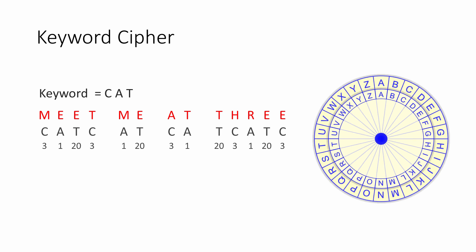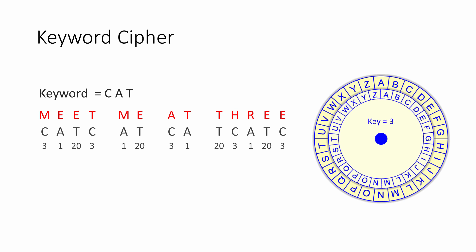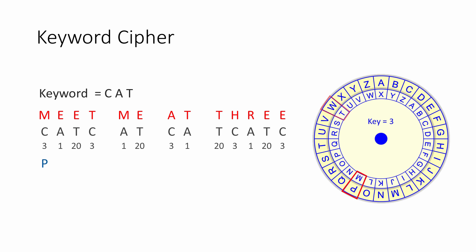You can work this out on scrap paper or even a spreadsheet, but a cipher wheel will come in handy if you've made one. If you wish, you can substitute all of the letters which have the same key at the same time, like I'm doing here — this will help to speed things up.